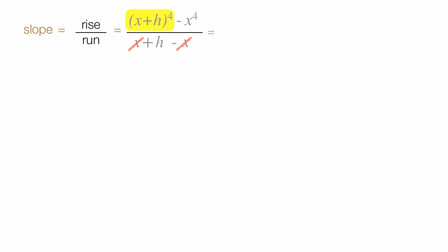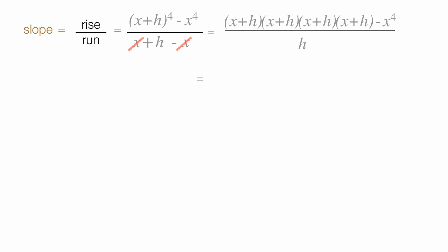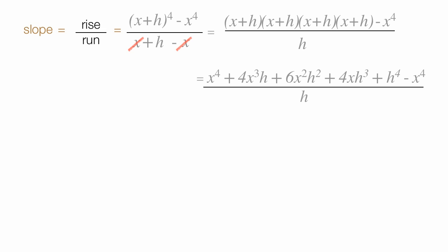I have x plus h to the fourth power, which is x plus h times x plus h times x plus h times x plus h, minus x to the fourth, divided by h. I'll show you all the algebra in detail of how you get to this next step. Notice these two x to the fourth powers cancel out. I have h here, h here, h here, h here, and h here, and I have it down here.